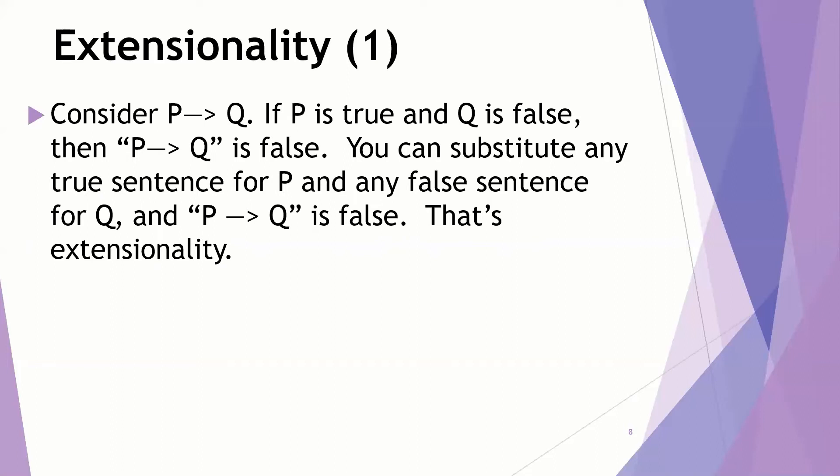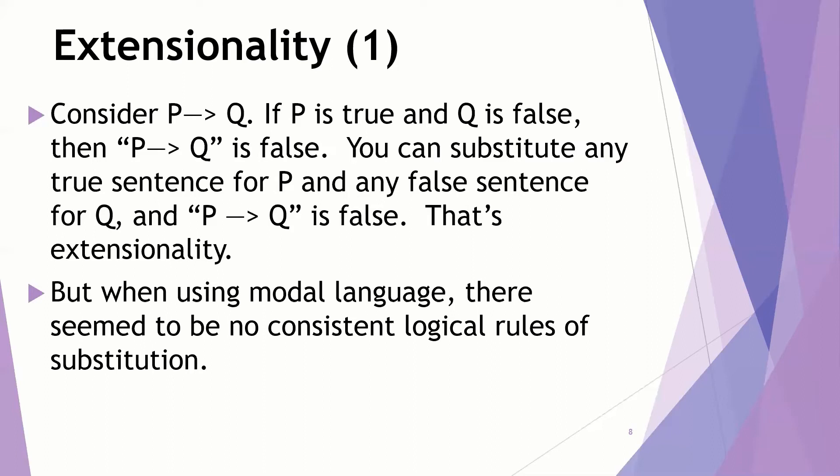We can construct truth tables. We can work with this idea. You can substitute any true sentence for P, any false sentence for Q, and you can be confident that if P then Q, that statement is false. That's what we mean by extensionality. You can substitute in whatever you need to, and the logical system is going to function well. The problem was that when using modal language, there seemed to be no consistent logical rules of substitution. Extensionality was lacking when we start to talk about modality. This is the history in the 20th century of what was going on, and you had a lot of empiricists, including Quine, being very skeptical about modality as a metaphysical notion.